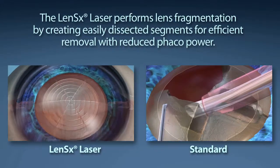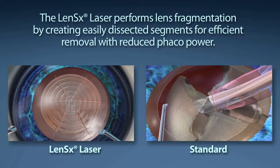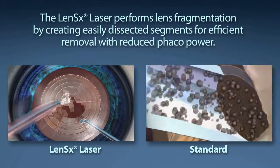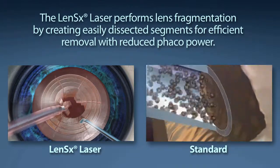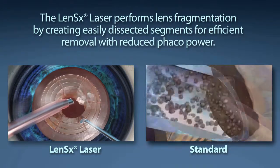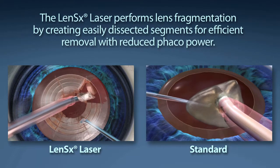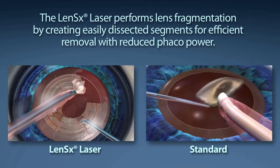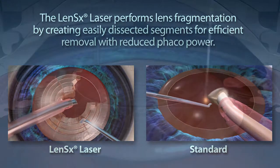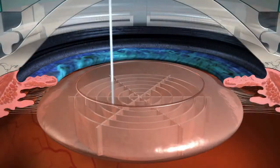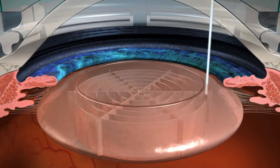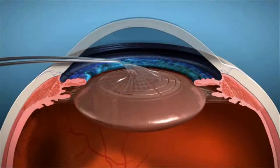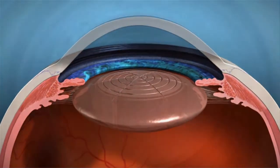Standard cataract surgery requires a phacoemulsification machine to segment and remove the content of the cataract. The goal of your surgeon is to reduce the amount of phaco energy used to remove your cataract. The LensX laser performs lens fragmentation, creating easily dissected segments for efficient removal with little or no phaco power.